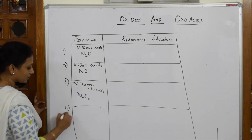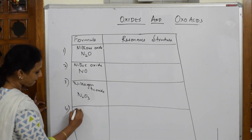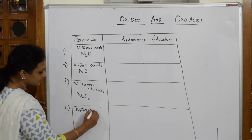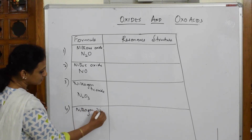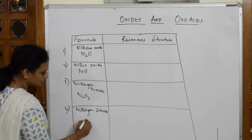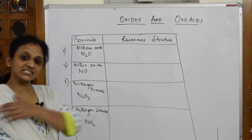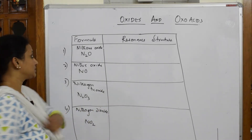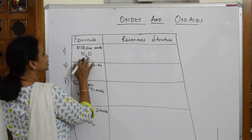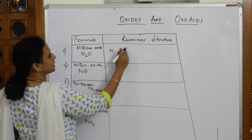The fourth oxide is nitrogen dioxide, NO₂. Let's come back and learn all the resonance structures. When drawing the nitrous oxide structure, nitrogen is the starting atom.